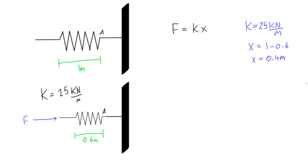All right, so now all we need to do is plug this in. So our force that we're going to apply to the spring is going to be equal to 25 kilonewtons per meter times 0.4 meters. Okay, so our meters cancel out. We get 25 times 0.4, so we have our force.